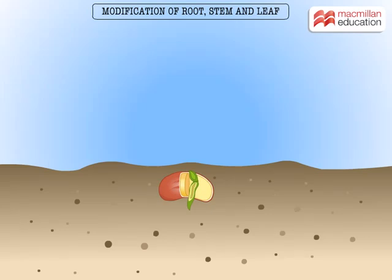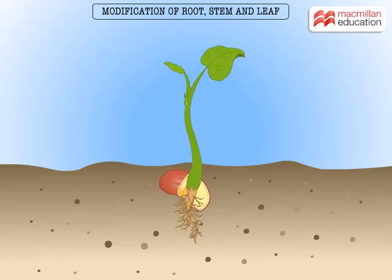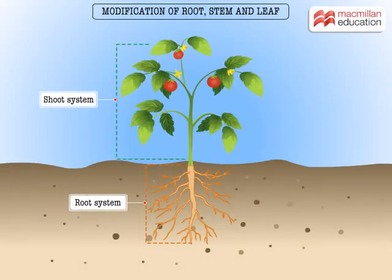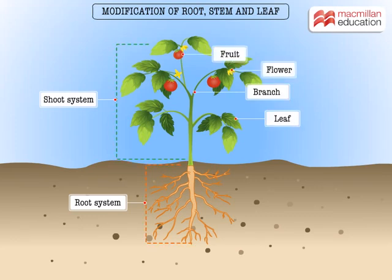Do you remember what happens to seeds after germination? The part that grows above the soil is called the shoot system, and the part that grows underground is the root system. The shoot system consists of branches, leaves, flowers, and fruits.